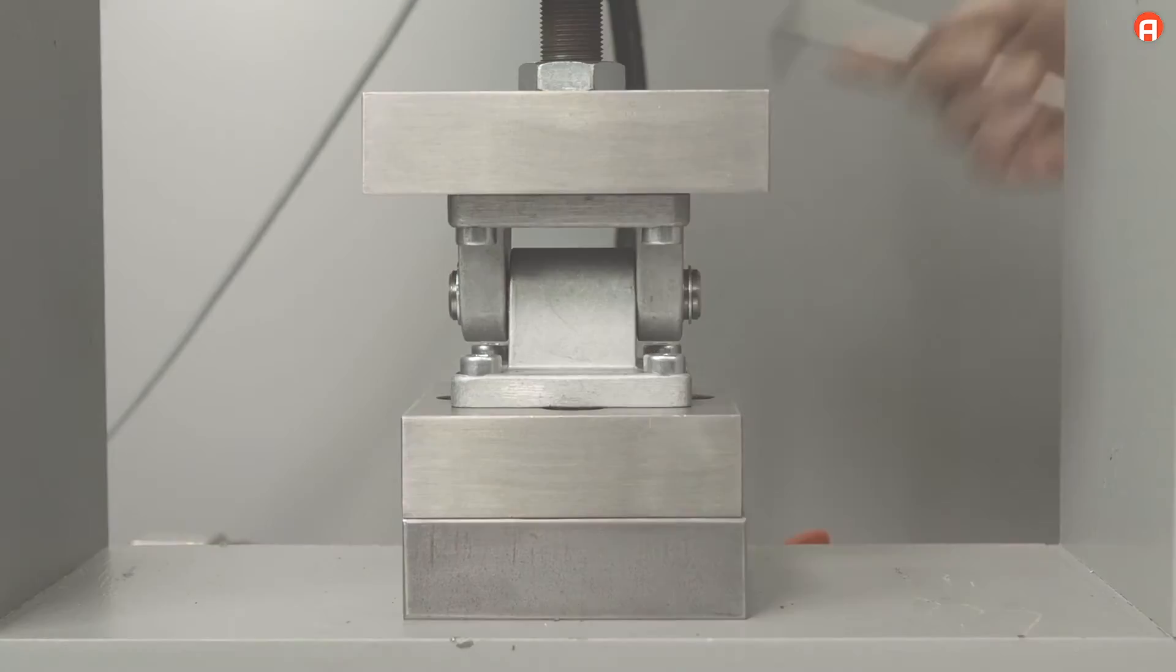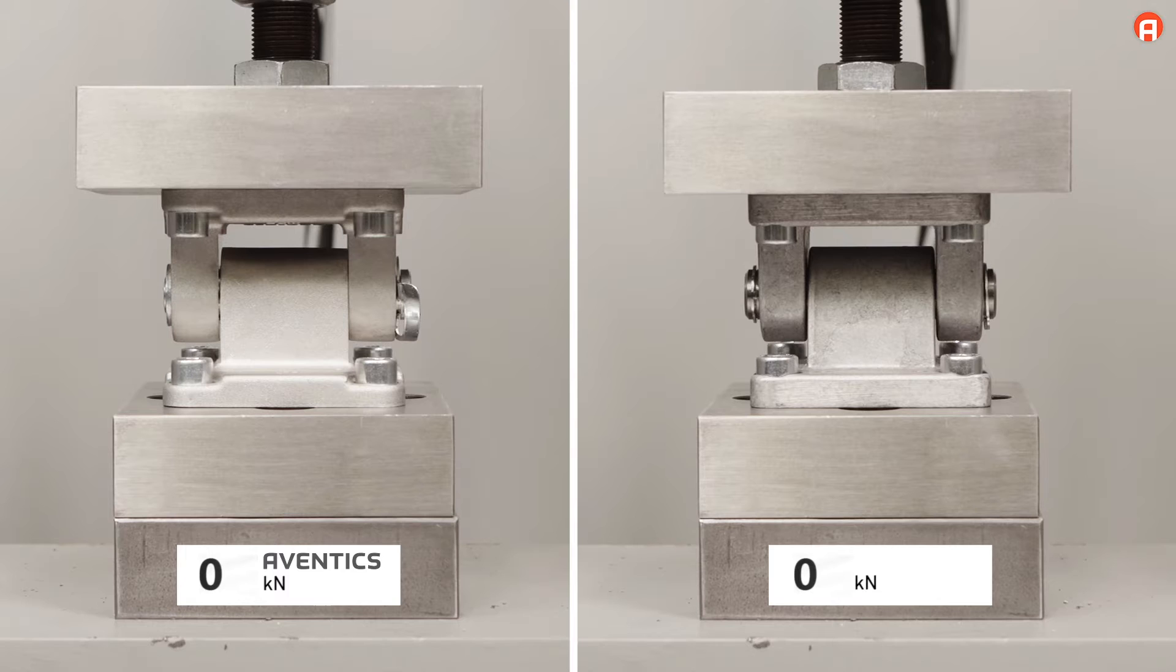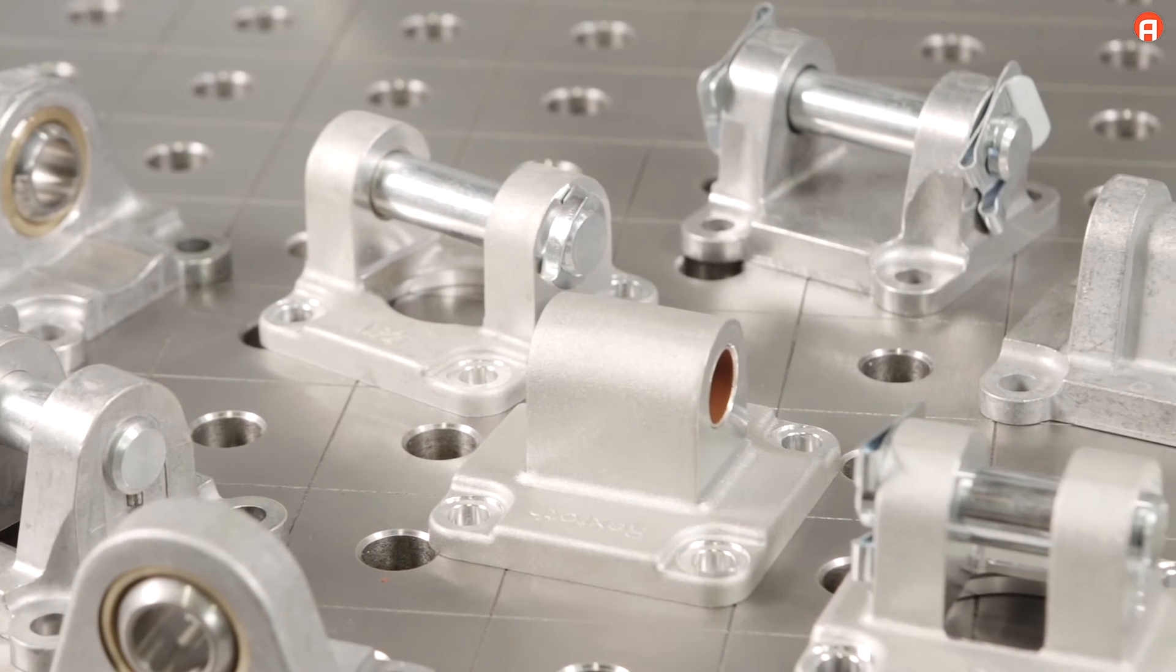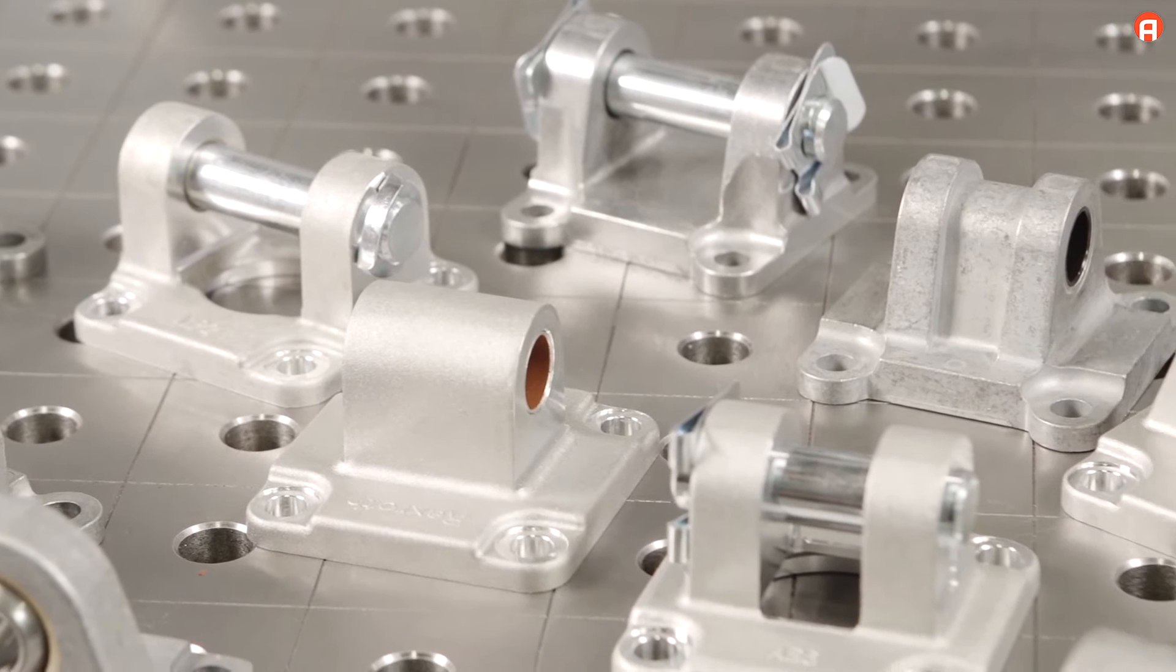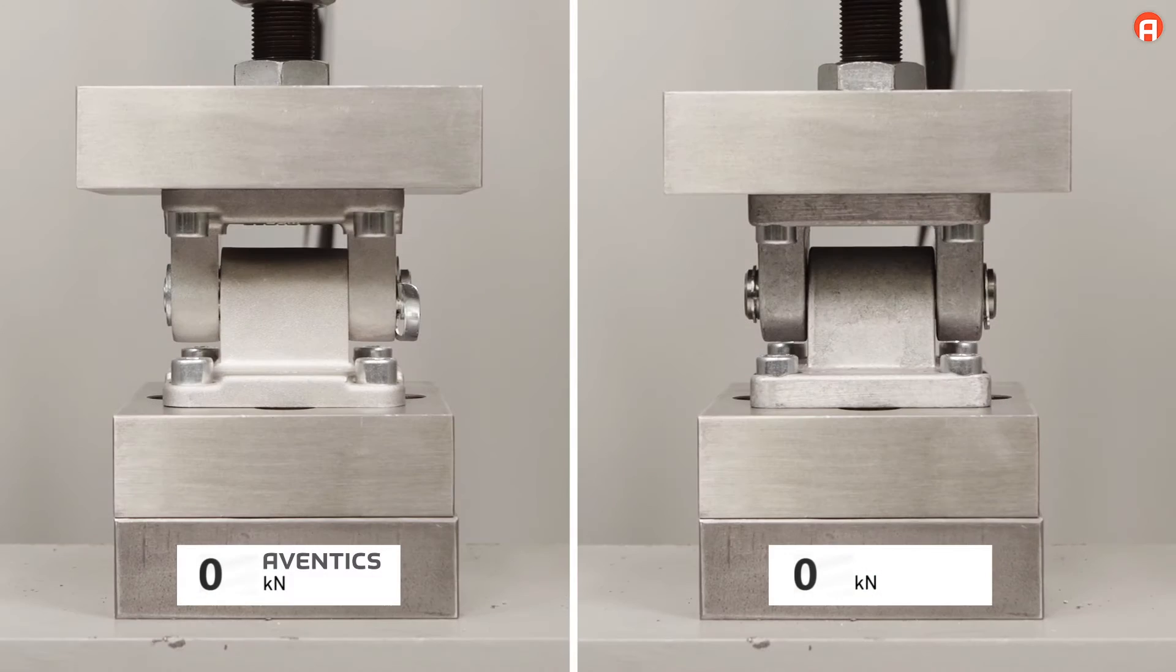Forged cylinder mountings from Aventix, seen on the left, and standard die-cast aluminum mountings are subjected to the same increasing load. The mountings are identical in size and type. As an example, we analyzed the behavior of the Aventix Clevis mounting MP2 and the rear eye MP4 in comparison with competitor products.